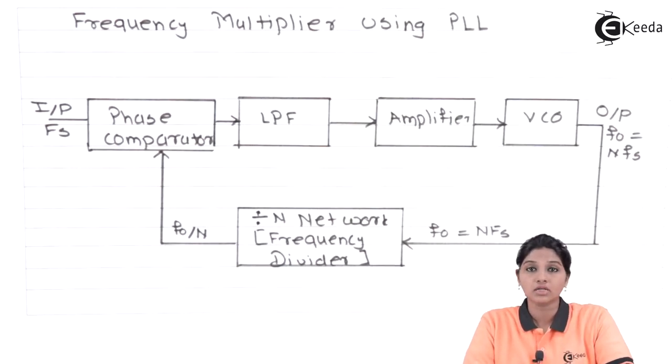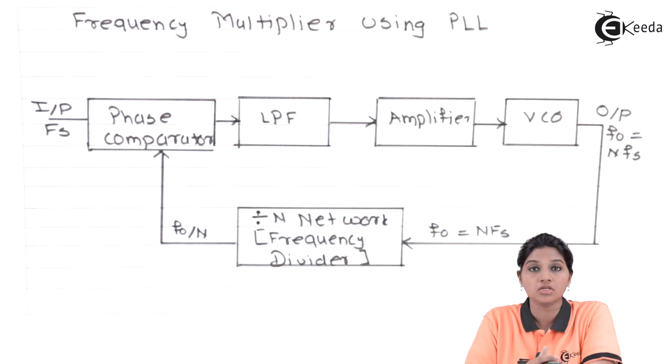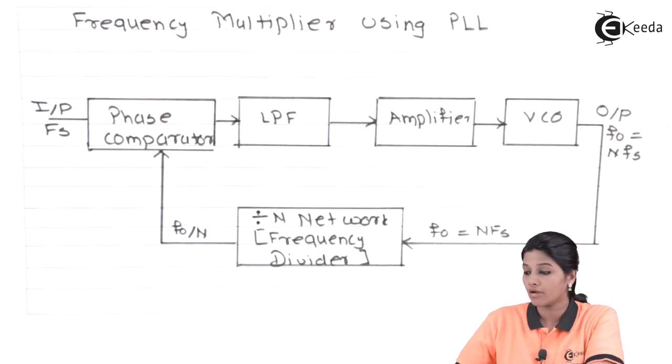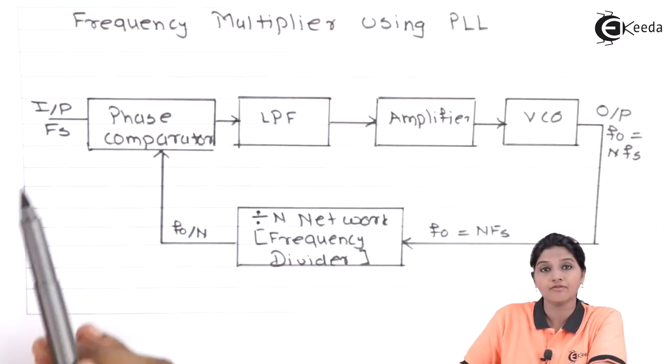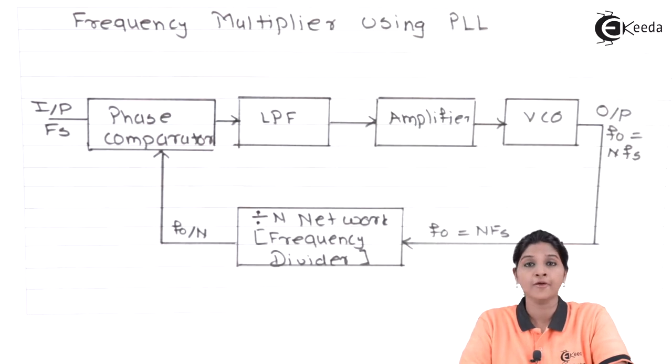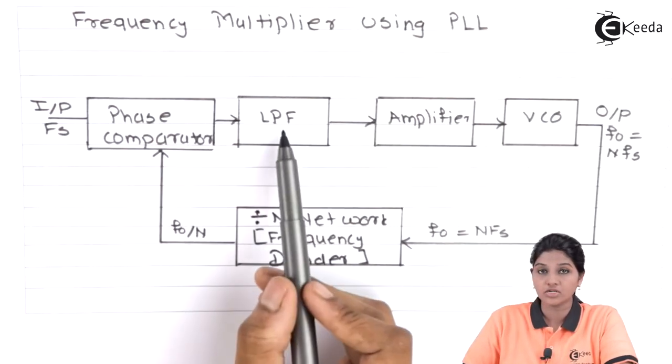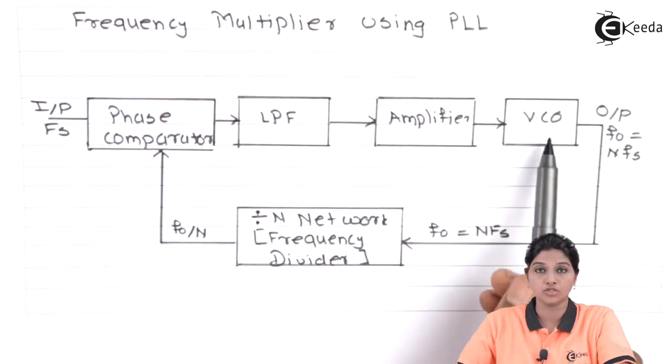In the block diagram, when a divide by N network or frequency divider network is connected between VCO output and phase comparator input, then the circuit of PLL can be used as a frequency multiplier. Internally, PLL consists of four major blocks: phase comparator or phase detector, low pass filter, amplifier, and VCO.